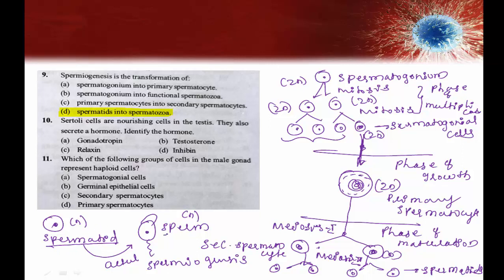The conversion of non-functional spermatids into actual sperms is called spermiogenesis. After spermiogenesis only are the spermatids finally converted into sperms. The right answer for this question is option D.